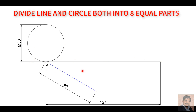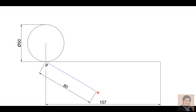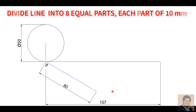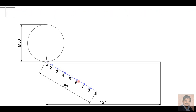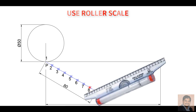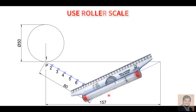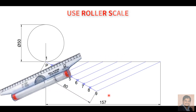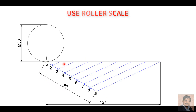Now I will divide the line and circle both into 8 equal parts. For that, I am drawing an 80 mm line at any angle. Next, divide this 80 mm line into 8 equal parts — each part will be 10 mm. I will number from point 1 up to point 9. Connect point 9 with the end point of the 157 mm line, then using a roller scale draw parallel lines from each point to get 8 equal divisions on the path: points 1, 2, 3, 4, 5, 6, 7, 8.